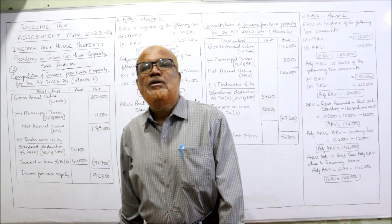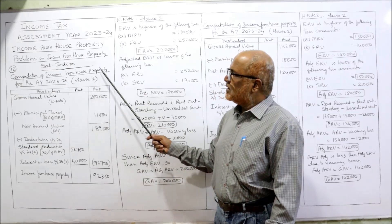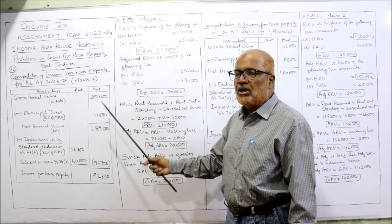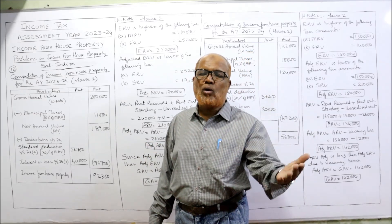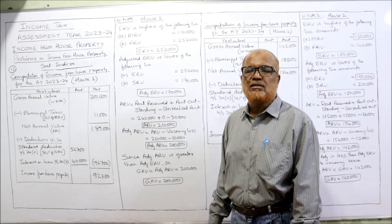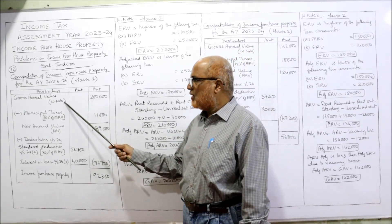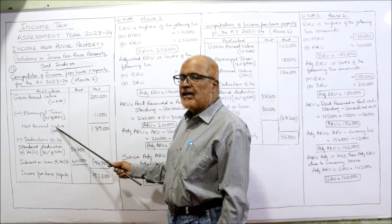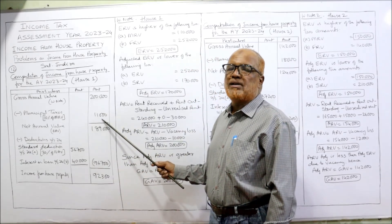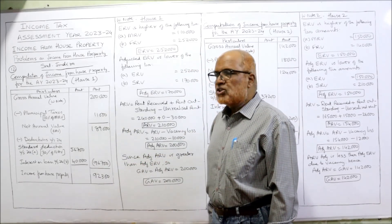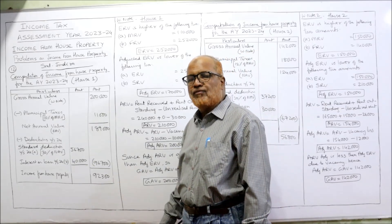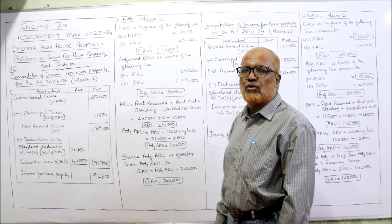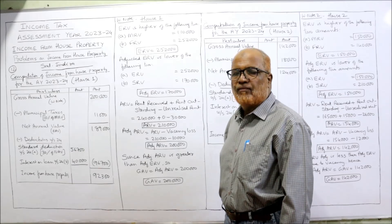First we compute the income from house number 1. Srimathi Indra — Computation of Income from House Property, Assessment Year 23-24, house number 1. We draw the format: GAV in working note, then municipal taxes 10% of MRV, giving net annual value. Deductions under section 24: standard deduction 30% of NAV under 24A, and interest on loan taken to repair the house under 24B. Then we get income from house property.